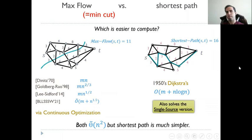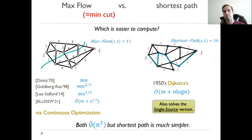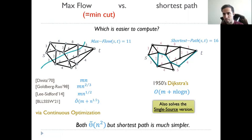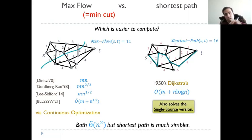Maximum flow or minimum cut versus shortest path — which of these problems is easier to compute? This is the question that we care about. In the 1950s, Dijkstra showed an algorithm with running time m plus n log n for the shortest path problem, where m is the number of edges and n is the number of nodes, while the algorithms for maximum flow have been much more complex.